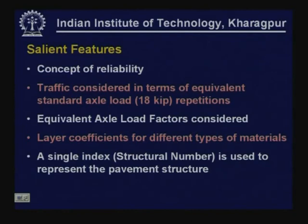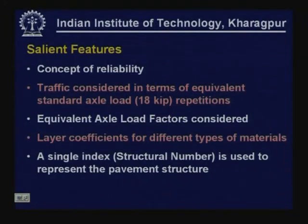The most important features of AASHTO guidelines include the concept of reliability built into the design procedure. Pavements are designed for different levels of reliability; one can select the reliability level for a given situation and thicknesses and other properties are selected accordingly. Traffic is considered in terms of equivalent standard axle load of 18 kip — 18,000 pounds repetitions — which is equivalent to 80 kilonewton, similar to what is considered in IRC 37-2001.